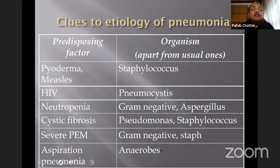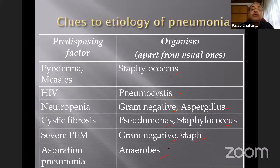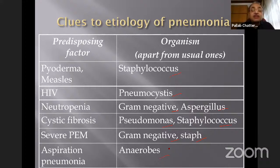Other pathogen clues by history: predisposing pyoderma or measles — think Staphylococcus; HIV — think Pneumocystis; neutropenia — think gram-negative or Aspergillus; cystic fibrosis in younger age — Staphylococcus, older — Pseudomonas; severe PEM — gram-negative and Staph; aspiration pneumonia — cover for anaerobes. It is difficult to grow organisms in pneumonia without a good bronchoalveolar lavage, and sometimes even that doesn't give results.